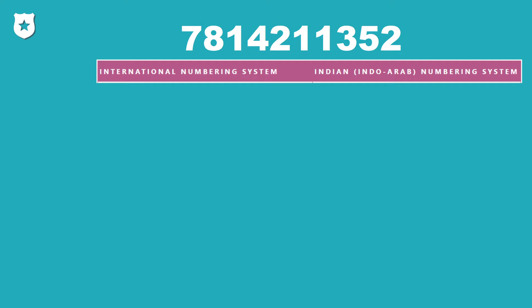As a first step, we will group the digits of the large number starting from the right-hand side. Each group will contain three digits, and we will put a comma in between two groups. So our number will look like 7,814,211,352.